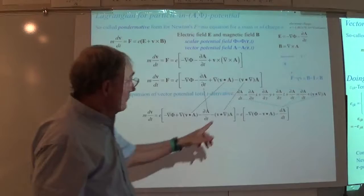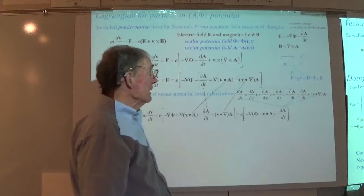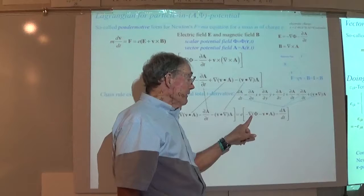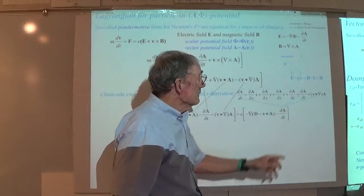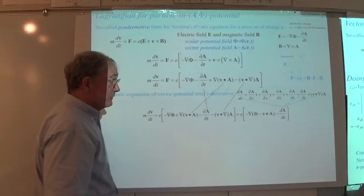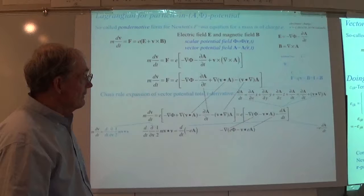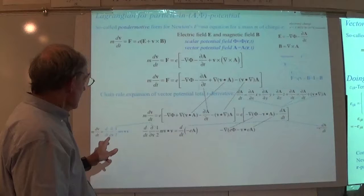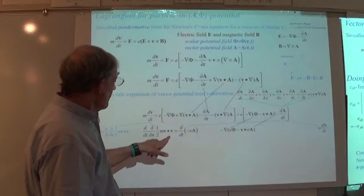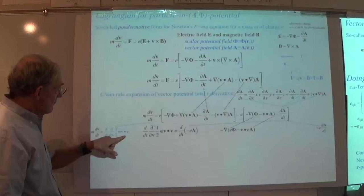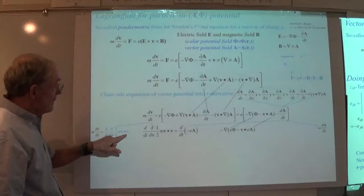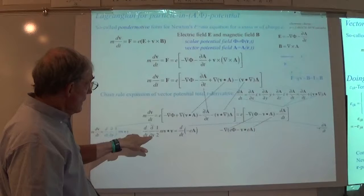We take advantage of the chain rule relation to write it in a much more compact form. We're going to have the scalar potential whose gradient we take, and something to do with the magnetism that also has a gradient taken — and then the total time derivative of A in the expression instead of the partial. Now I'm isolating kinetic energy, and I'm realizing I have a Lagrangian-like expression coming up.